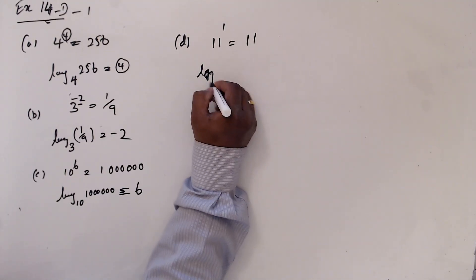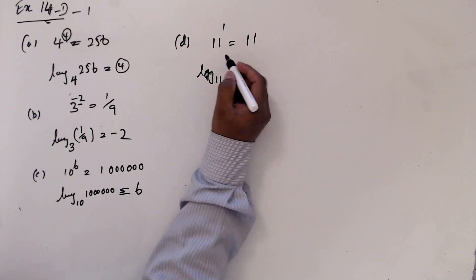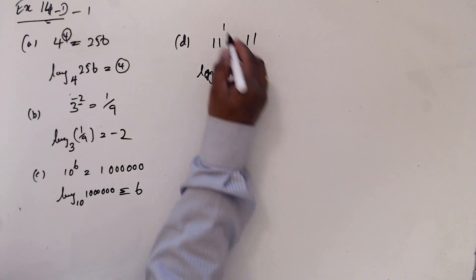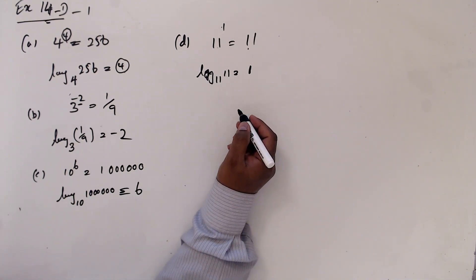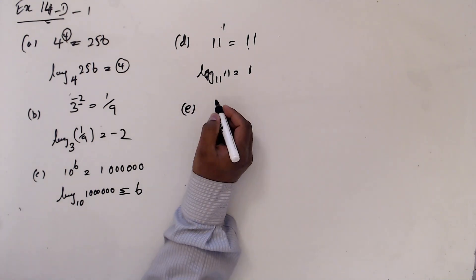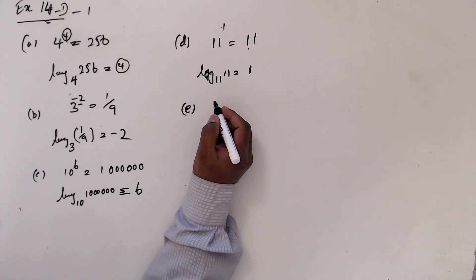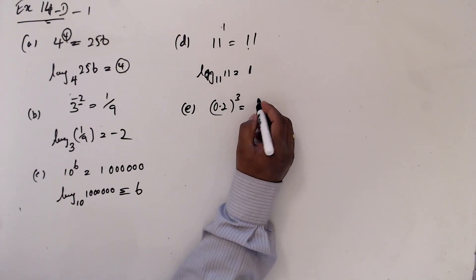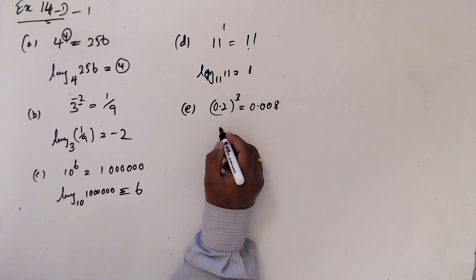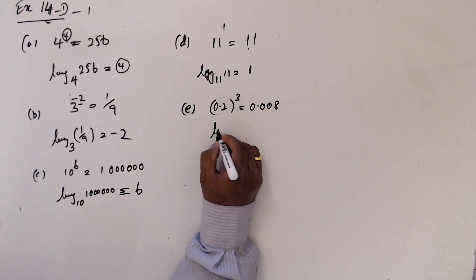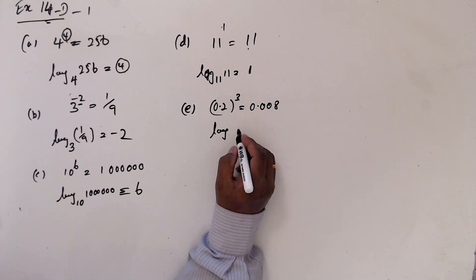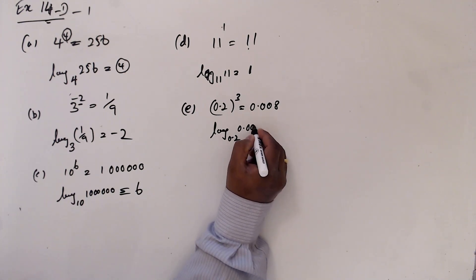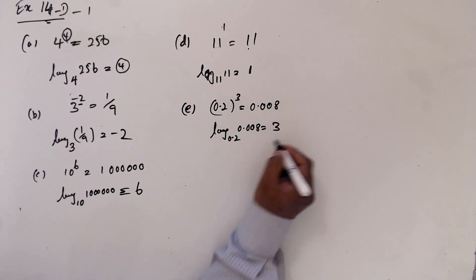So, logarithm to base 11 of this value is 1. And e: 0.2 to the power 3 is 0.008. So bring these 3 out now — logarithm to base 0.2 of 0.008, you can write as 3.